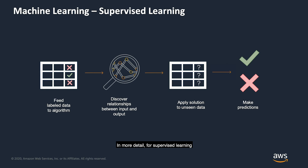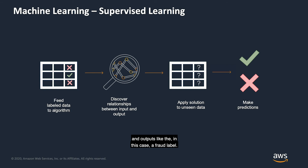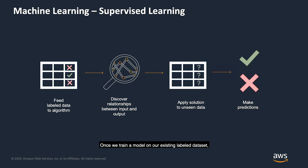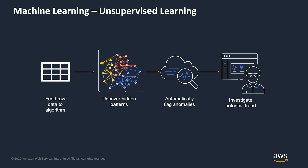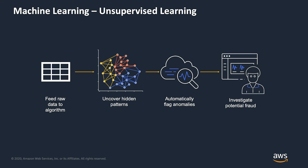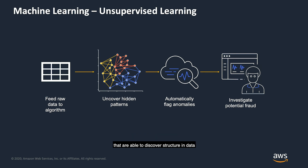In more detail, for supervised learning, we train an algorithm to discover the relationships between inputs like transaction time, amount, country, IP address, etc., and outputs like a fraud label. Once we train a model on our existing labeled dataset, we can deploy it to identify fraud in our live data. When we don't have access to labels, we still want to be able to detect anomalous behavior in our data and flag transactions as potential fraud. We can do that by using unsupervised learning algorithms that are able to discover structure in data and allow us to identify potentially fraudulent transactions.